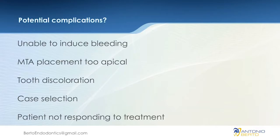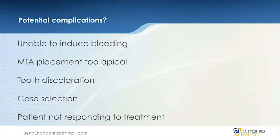What are the potential complications? Sometimes, as with any dental or medical treatment, this is not 100% successful. In certain cases, we're going to be unable to induce bleeding — in those cases, I'd recommend placing the medication one more time and bringing the patient back. If MTA placement goes too apical, you can always wash it out and try again — we've explained how to prevent that with the collagen barrier. We've also discussed how to avoid tooth discoloration, and we'll talk about case selection in a moment.